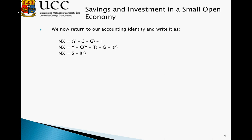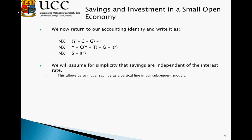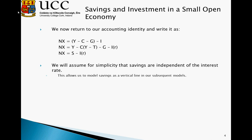In a closed economy, savings would have to equal investment. In the open economy, because there is access to international markets, individuals can borrow or loan money internationally, and our small open economy does not require savings and investment to equilibrate. We will assume for simplicity that savings are independent of the interest rate — the same conclusions can generally be reached when we allow savings to vary with interest rates. This allows us to model savings as a vertical line in subsequent models.